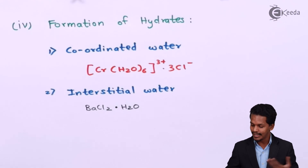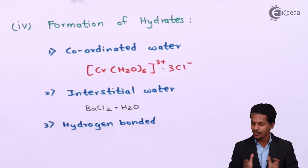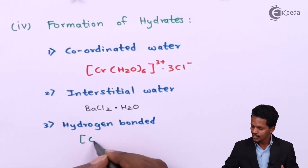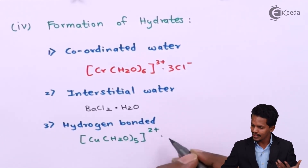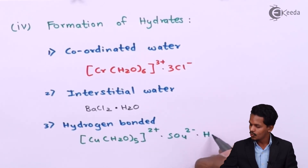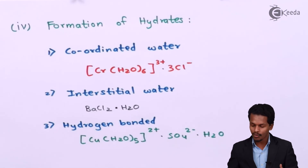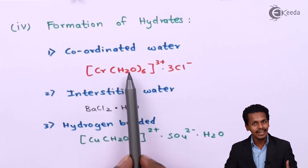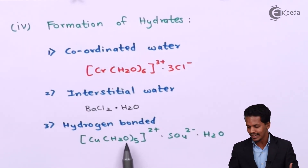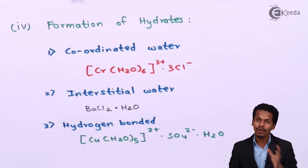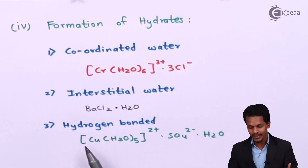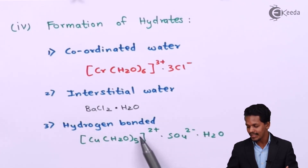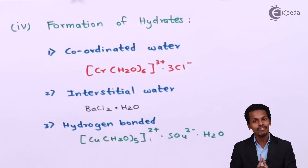The last type is hydrogen-bonded water molecules. For example, in [Cu(H2O)5]²⁺·SO4²⁻·H2O, five H2O molecules form coordination covalent bonds with the copper. But the additional water molecule outside the square bracket does not form a coordination bond with copper — instead, it forms a hydrogen bond with the complex. That is why it is written outside the square bracket. These are the chemical properties of water.